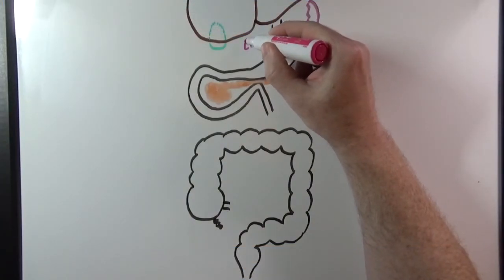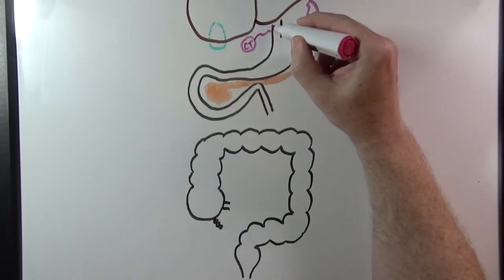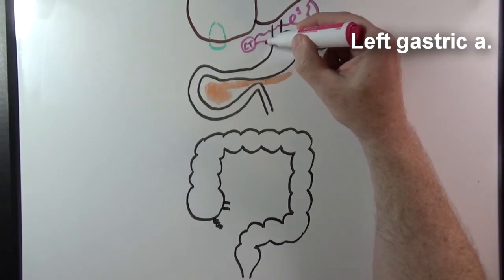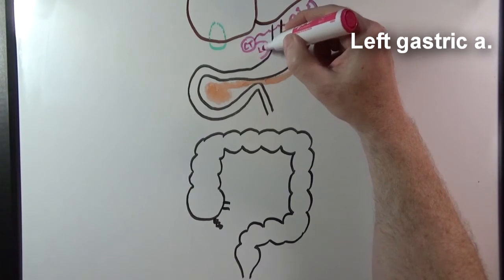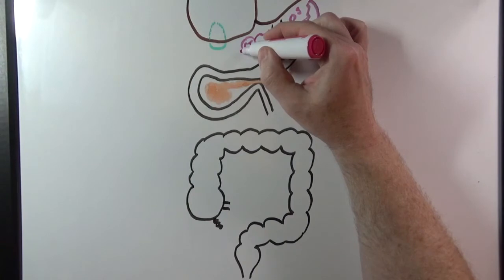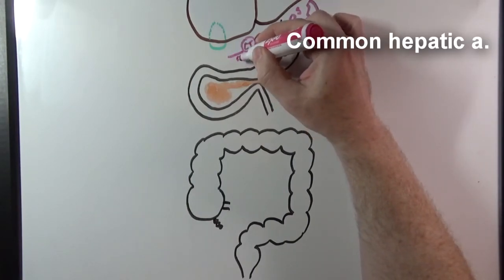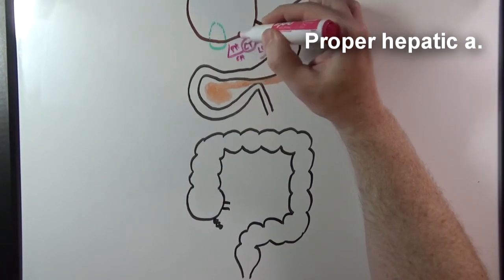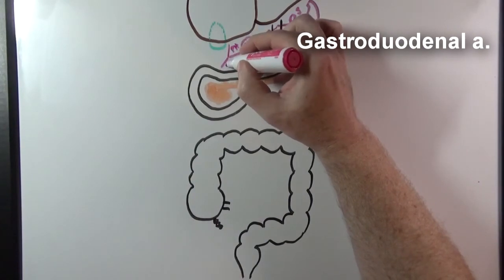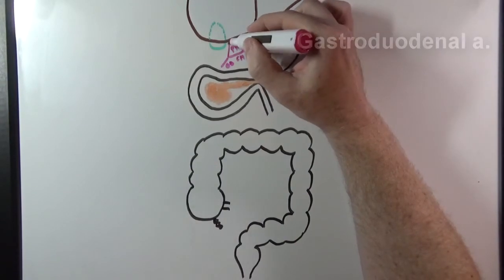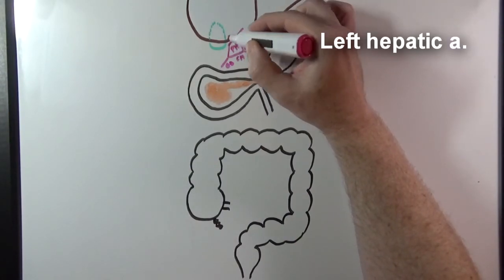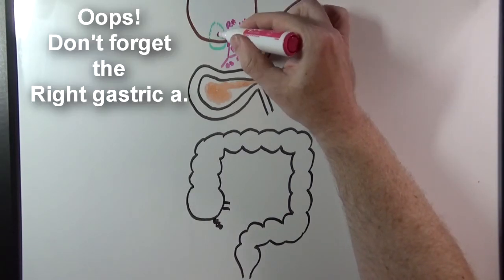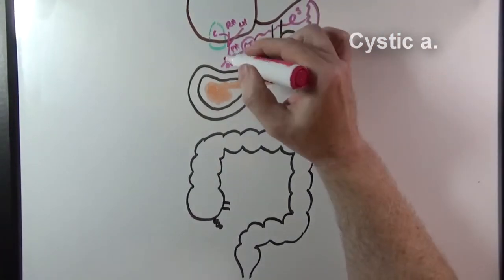Now we tie everything together in one complete picture, drawing the celiac trunk. The splenic artery branches to the spleen. The left gastric artery runs in the lesser curvature of the stomach. The third branch, the common hepatic artery, divides into the proper hepatic artery going superiorly and the gastroduodenal artery going inferiorly. The proper hepatic gives rise to the left and right hepatic arteries going to the liver, and we also have the right gastric artery and the cystic artery going to the gallbladder.